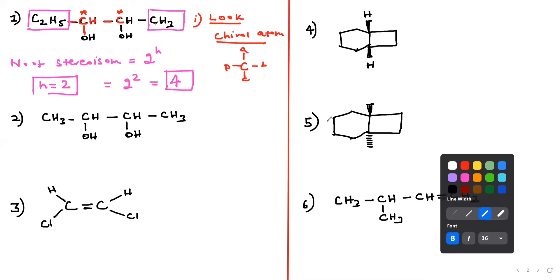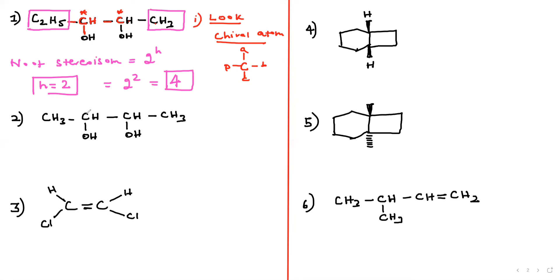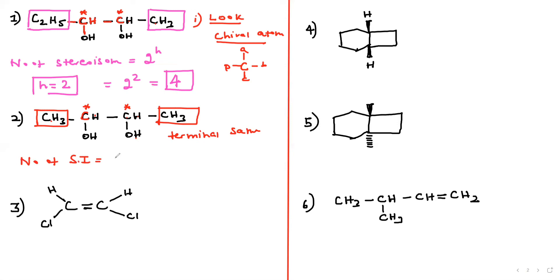Second question, same method. Find chiral atoms — both carbons are chiral centers, so n = 2. But the terminals are both CH3 — they are the same. Therefore use the formula 2^(n-1) = 2^(2-1) = 2^1... wait, 2^(n-1) with n=2 gives 2^1 = 2, plus the meso compound. The answer is 3 stereoisomers. The meso compound is optically inactive but still counted as a stereoisomer.